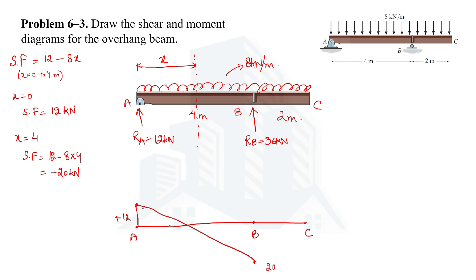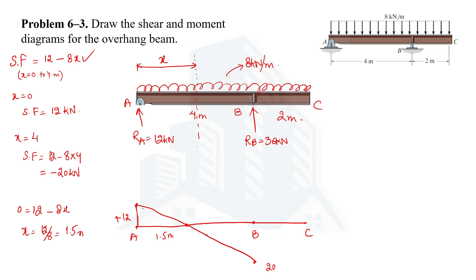The shear force is zero at some point between A and B. Setting V = 12 − 8x = 0, we get x = 12/8 = 1.5 meters from A. This is where the shear force crosses zero. We can calculate the shear force at any other distance within this range by substituting the value of x into the equation.